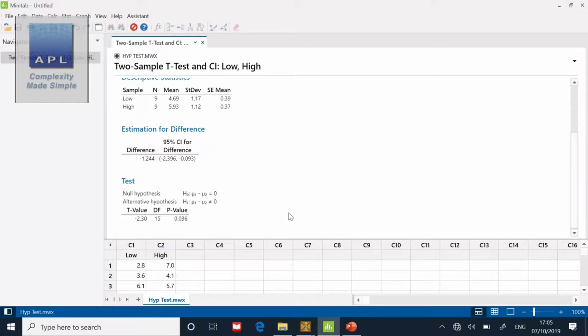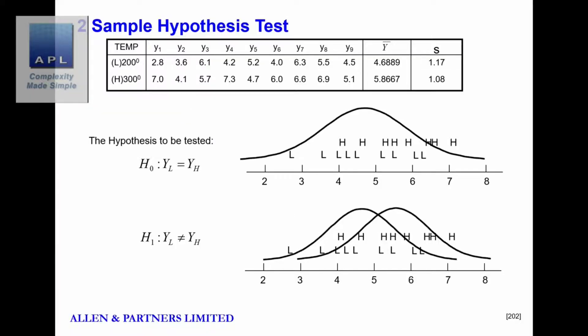So here we are, the original hypothesis test. The alpha value I wanted to beat: 0.05. This is your chance of making a mistake if you conclude the new temperature makes a difference. Our p-value generated by Minitab was 0.036.